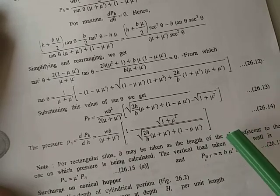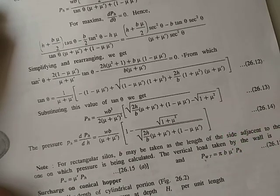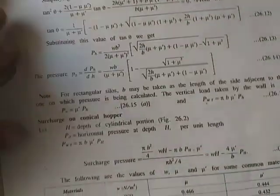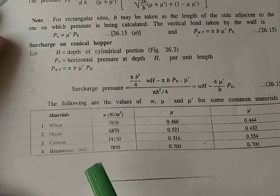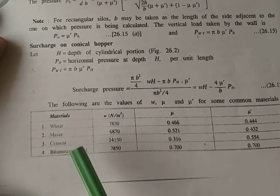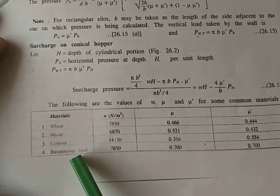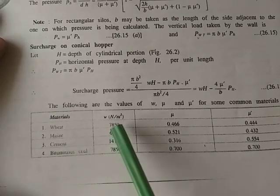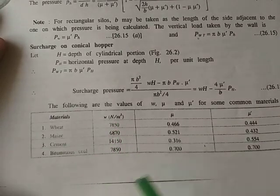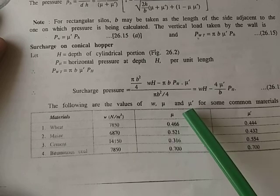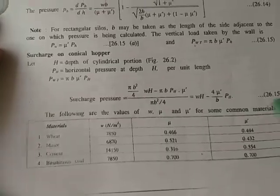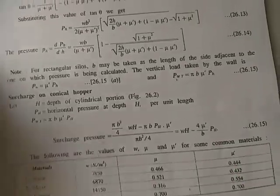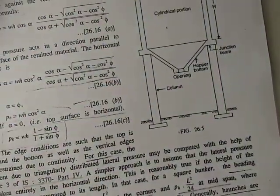A reference table lists properties of common storing materials: wheat, maize, cement, bituminous coal, and others. Unit weights, coefficient of friction of the material (μ), and coefficient of friction between material and wall (μ') are provided. This table is used to obtain friction coefficients for silo design.